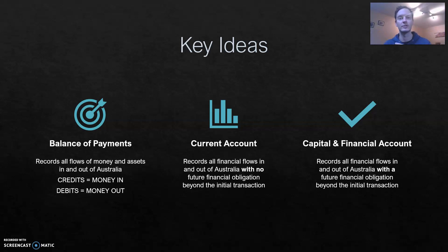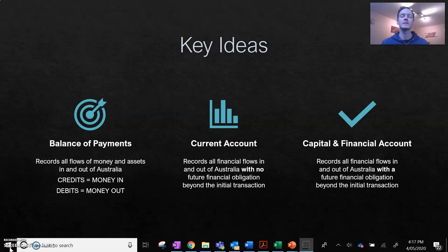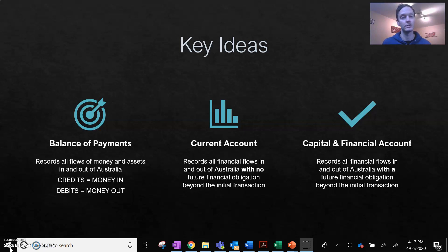Moving on to the current account — this is the part of the balance of payments which records all financial flows in and out of Australia with no future financial obligation beyond the initial transaction. That's how we split up where transactions go between the current account and the capital and financial account. The capital and financial account covers transactions which do have a future financial obligation.